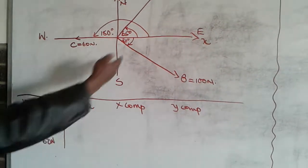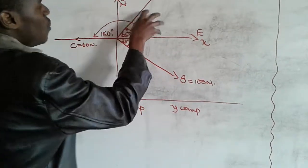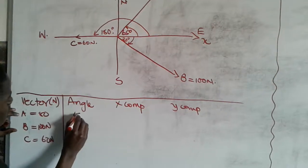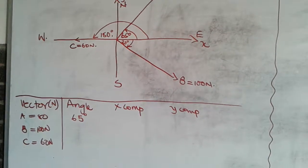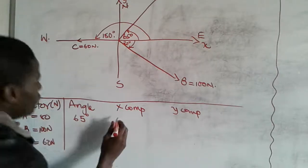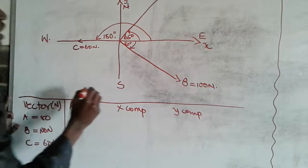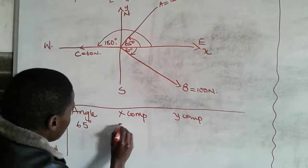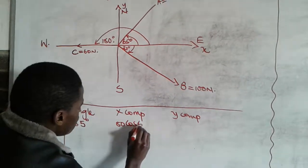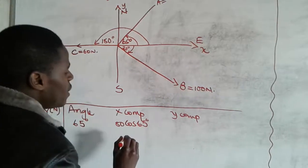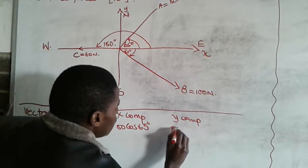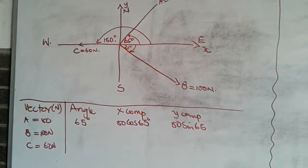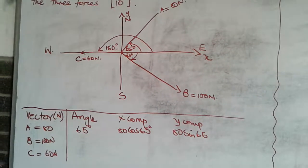For vector A, our angle is 65 degrees, which places it in the first quadrant. The x-component is 80 cos 65°, and the y-component is 80 sin 65°.